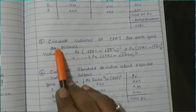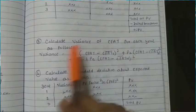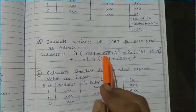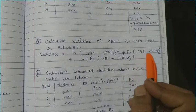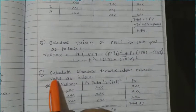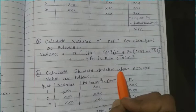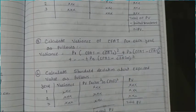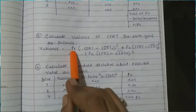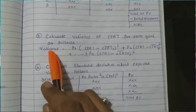At the third stage, we calculate the variance of the Cash Flow After Tax for each year. The variance formula is: σ² = P1×(CFAT1 − CFAT̄)² + P2×(CFAT2 − CFAT̄)² + ... For the standard deviation calculation table, the columns are: cash flow, probability, (CFAT − CFAT̄), (CFAT − CFAT̄)², and then multiplied by probability to get variance.